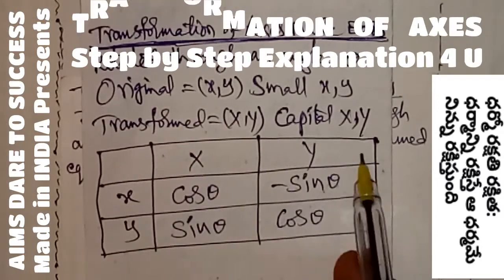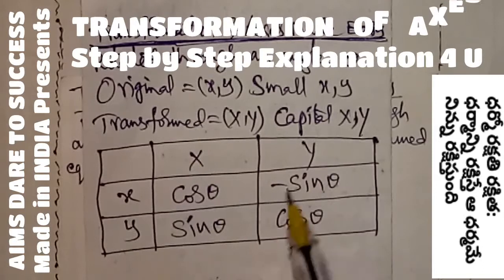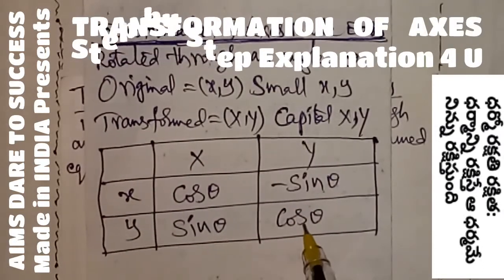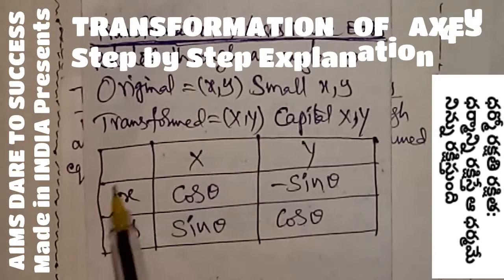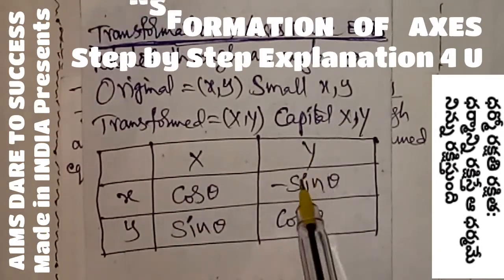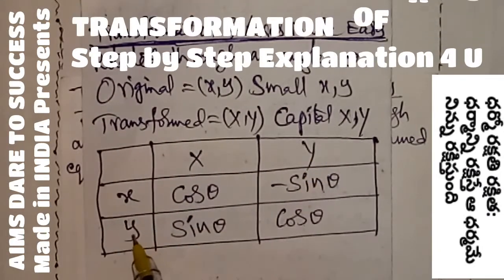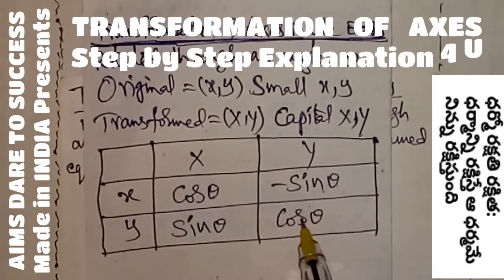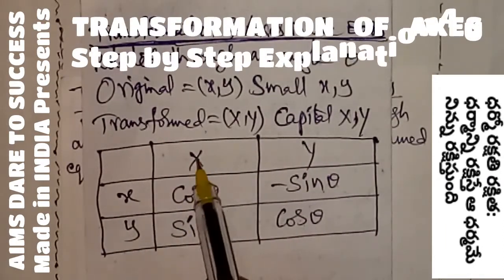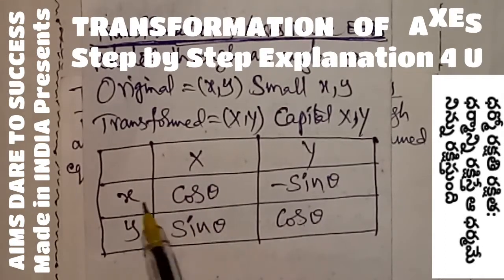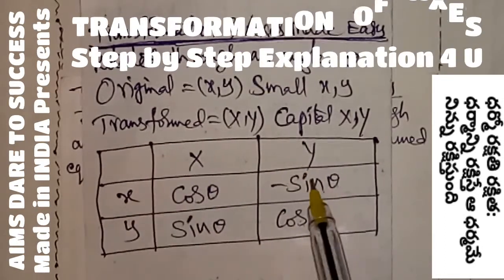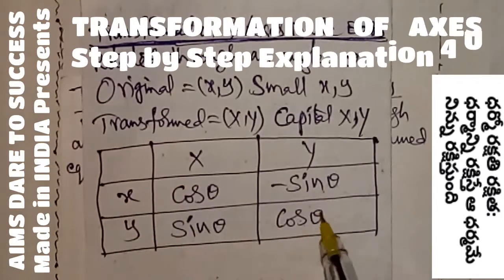So small x, small y; capital X, capital Y. You write cos θ, next minus sin θ, here sin θ, then cos θ. Using this box: to get small x, the formula is capital X·cos θ − capital Y·sin θ. To get small y: capital X·sin θ + capital Y·cos θ. To get capital X: small x·cos θ + small y·sin θ. To get capital Y: −x·sin θ + small y·cos θ.